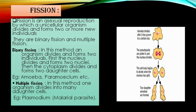Fission is an asexual reproduction which takes place in unicellular organisms, where the organism splits to form new individuals. This fission is of two types. Binary fission, where a single cell divides into two to form daughter cells — example: amoeba.